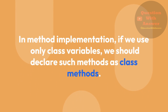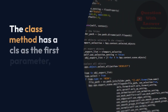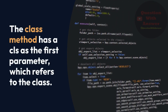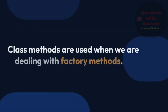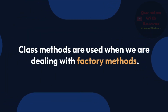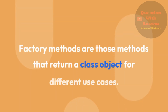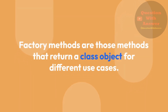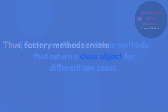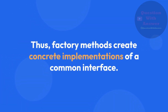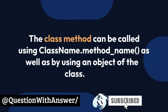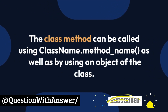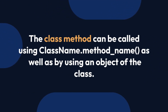In method implementation, if we use only class variables, we should declare such methods as class methods. The class method has cls as the first parameter, which refers to the class. Class methods are used when we are dealing with factory methods. Factory methods are those methods that return a class object for different use cases, and they create concrete implementations of a common interface.